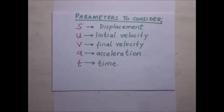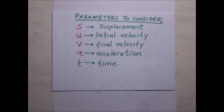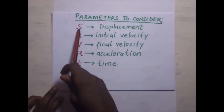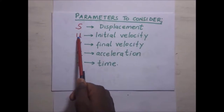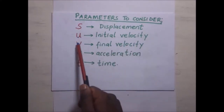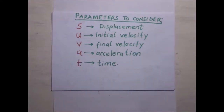We are going to dive straight into how we derive the equations of motion — that is, motion in a straight line. We have approximately five equations of motion. Before we get into the derivations, I would like to take you through an overview of the parameters we will use: displacement (s), initial velocity (u), final velocity (v), acceleration (a), and time (t).